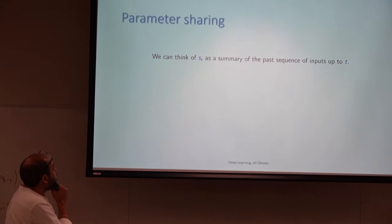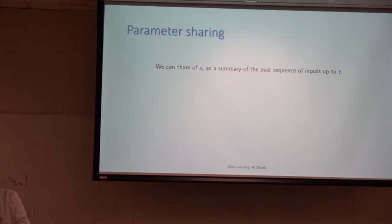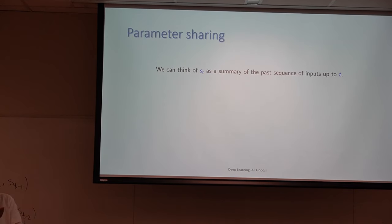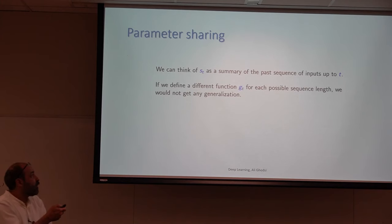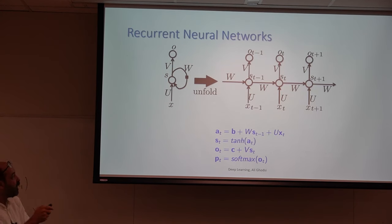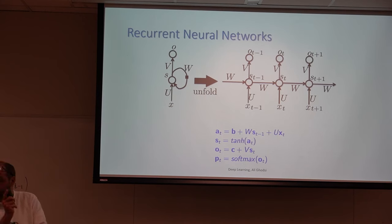In this dynamic system, you need to share weights. You can't assume the properties of the network change over time. You have to share weights and assume that the W's are fixed over time, the V's — which are weights from states to the output — are fixed over time, and the U's — which are weights from input to hidden space — are fixed over time.